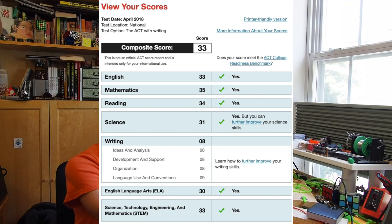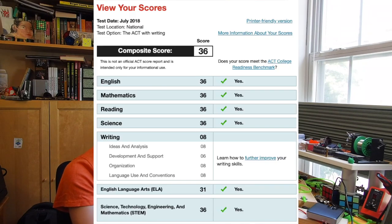I took the ACT twice. Once in April 2018, I got a 33 composite, and three months later in July 2018, I got a 36 composite, 36 across the board, and I got an 8 out of 12 on the essay.